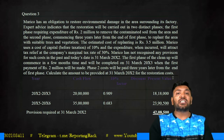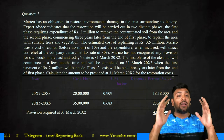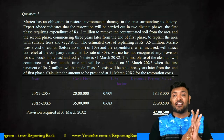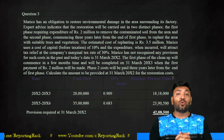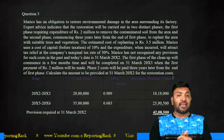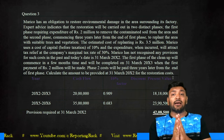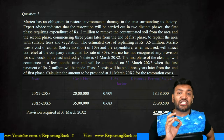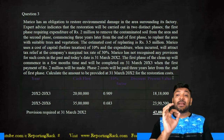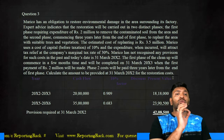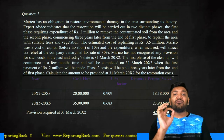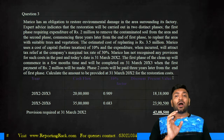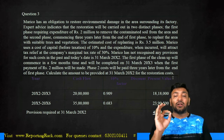Marico has an obligation to restore environmental damage in the area surrounding the factory. Expert advice indicates the restoration will be carried out in two distinct phases: the first phase requires an expenditure of 2 million to remove contaminated soil, and the second phase commences three years later to replant the area with suitable trees and vegetation, with an estimated cost of 3.5 million. Marico uses a cost of capital of 10%, and the expenditure will attract a tax relief of 30%. Marico has not recognized any provision as of 31st March 2012.